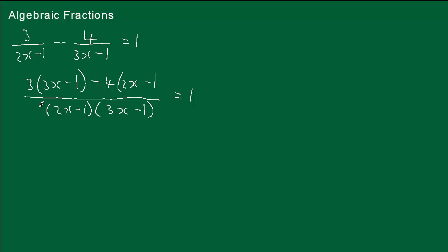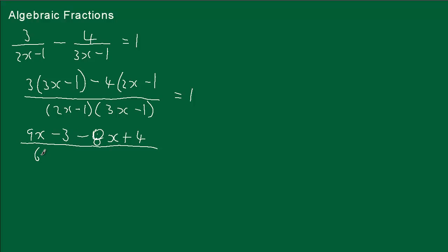We'll expand the top and expand the bottom to see what we get. So we get 9x minus 3, minus 4 times 2x which is 8x, then minus 4 times minus 1, well that's plus 4. On the bottom: 2x times 3x is 6x squared, 2x times minus 1 is minus 2x, minus 1 times 3x is minus 3x, and minus 1 times minus 1 is plus 1.